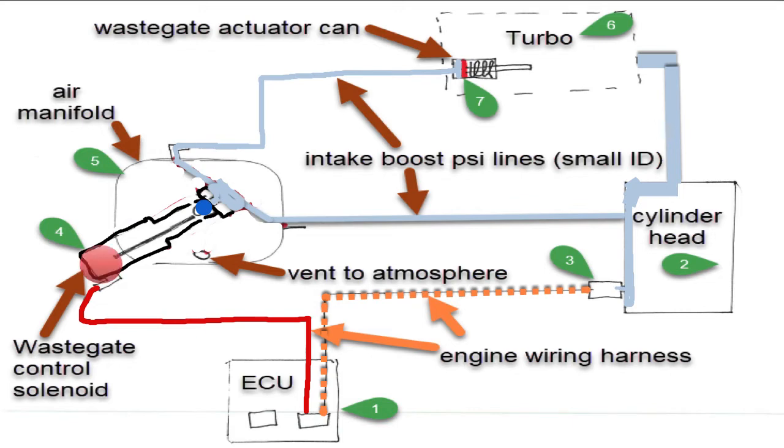When you start the engine up, the ECM energizes the wastegate control solenoid. That drives a steel pin in it up against that blue ball and the blue ball will press tight against the seat and no air is able to escape down through the vent to atmosphere.